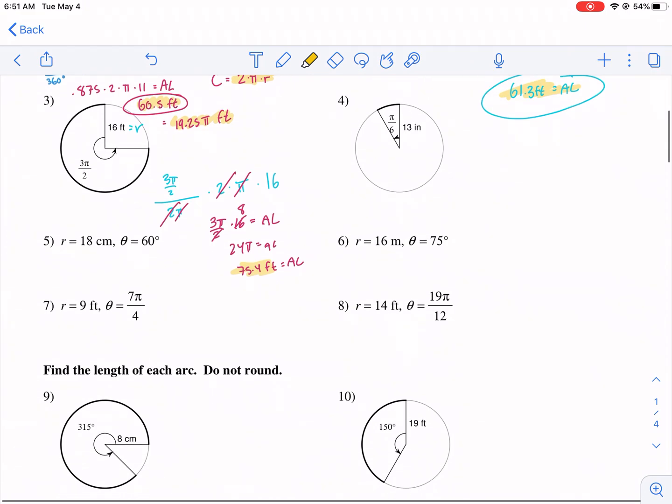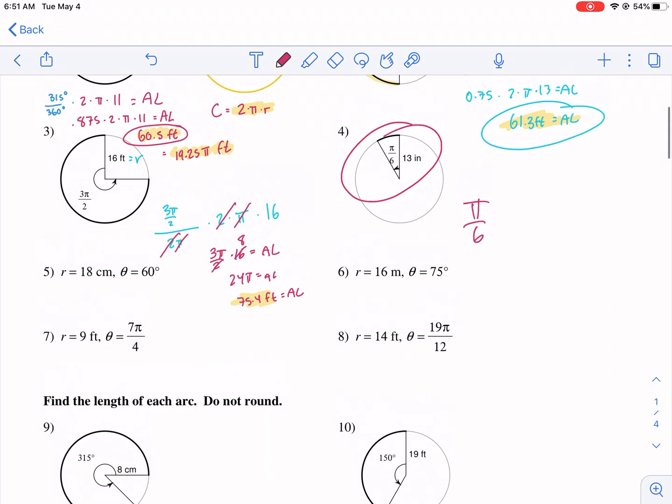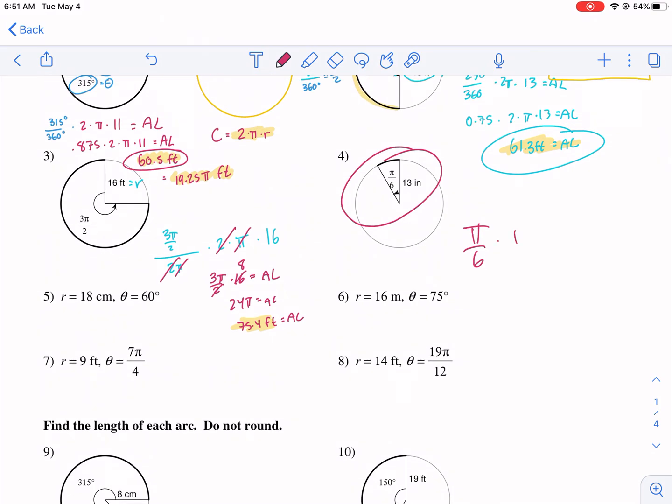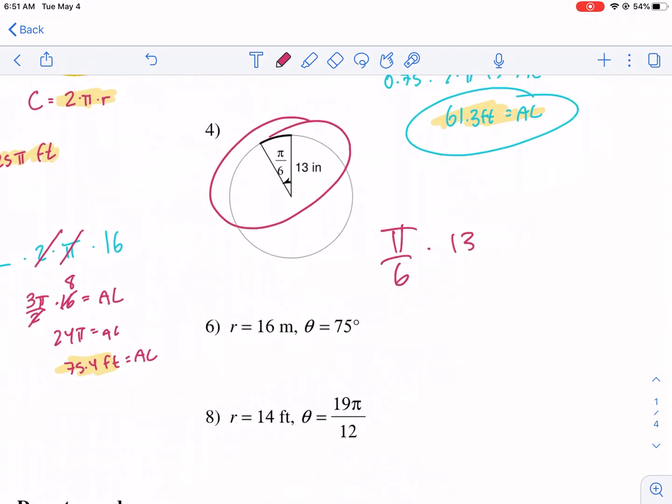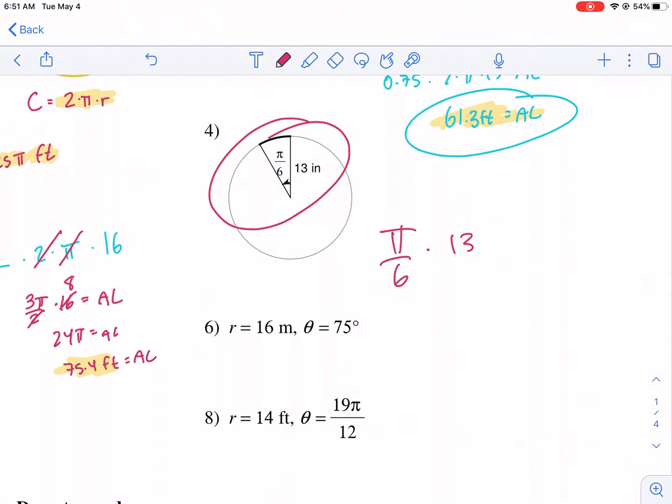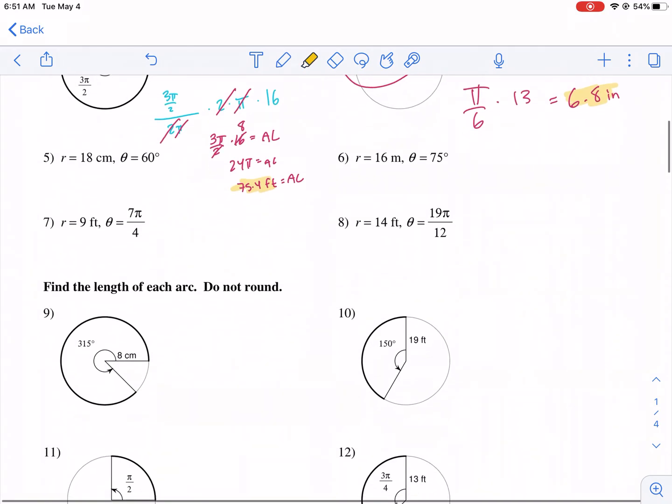So these are all the same. Again, if we wanted to find radians, we do π over 6 times the radius, 13, because essentially we're divided by 2π and multiplying by 2π. Again, the only thing that's different is multiplying by r. So we have 13 times π divided by 6. And we get 6.8 inches for that. There we go.